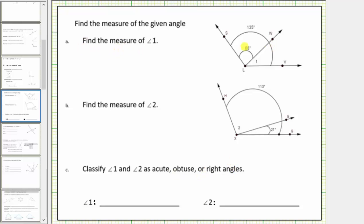For A, we're asked to find the measure of angle one. Angle one is formed by ray LW and ray LV. We're also given the measure of the larger angle: angle SLV equals 135 degrees, and the measure of angle SLW equals 88 degrees. So the sum of the measures of these two angles equals 135 degrees, and therefore the measure of angle one must equal 135 degrees minus 88 degrees.